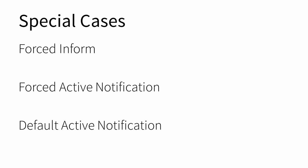There are some parameters that either cannot be changed or have default behavior. Forced inform parameters are those that must be included in every Inform RPC. Forced active notification parameters must always be set to active notification and should ignore requests to do otherwise. Default active notification parameters begin with active notifications set in their attributes upon factory reset. These special cases are defined on a per-parameter basis in their respective data models.